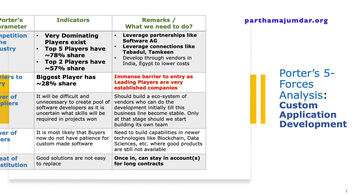The business line I use for illustration is custom application development, which has proved to be our major bread earner in the last nine months. The first parameter — competition in the industry — revealed very dominant players already in the market. The top five players held as much as 78% of market share, and the top two players alone controlled 57% of the market, meaning they were very established and would not allow newcomers easily.